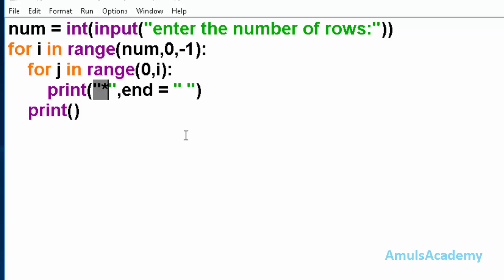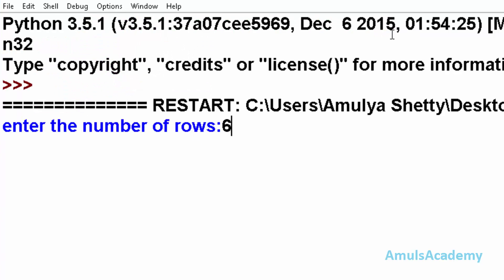Now we'll save and run this code. I'll enter number of rows as 6, and here we can see the output: 6 stars, then 5, then 4, then 3, then 2, and finally 1.